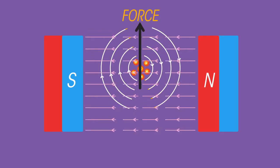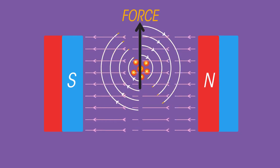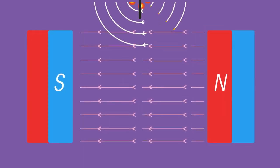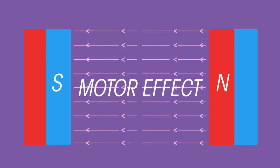So the wire will be pushed vertically upwards out of the magnetic field. This is the motor effect.